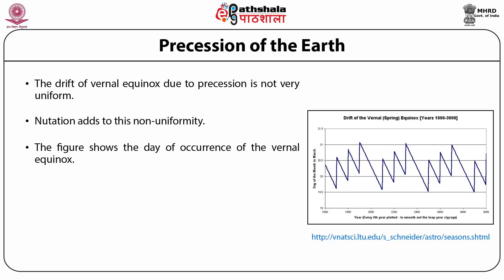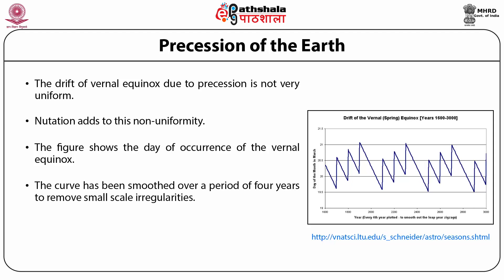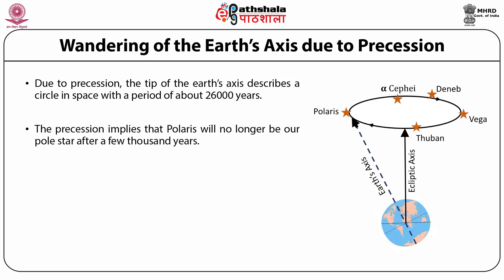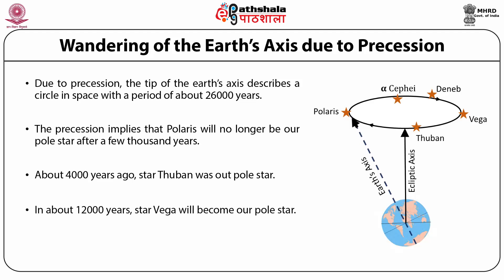The figure shows the day of occurrence of vernal equinox, with the curve smoothed over a period of 4 years to remove small-scale irregularities. Due to the precession, the tip of earth's axis describes a circle in space with a period of about 26,000 years, so it wanders among stars. The precession implies that Polaris will no longer be our pole star after a few thousand years. About 4,000 years ago, the star Thuban was our pole star. In about 12,000 years, the star Vega will become our pole star.